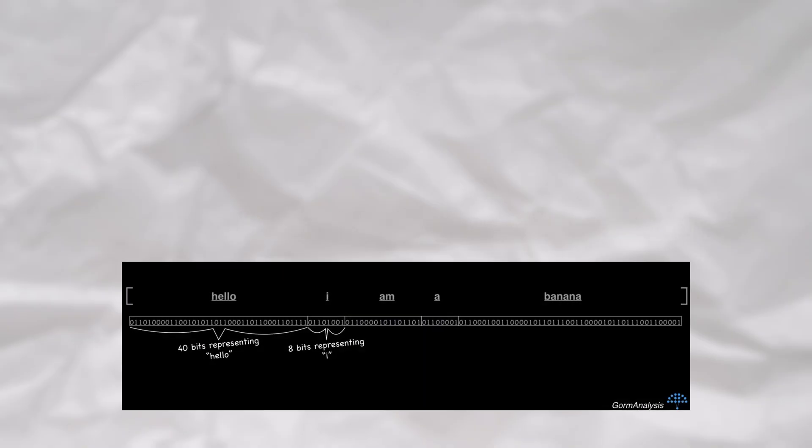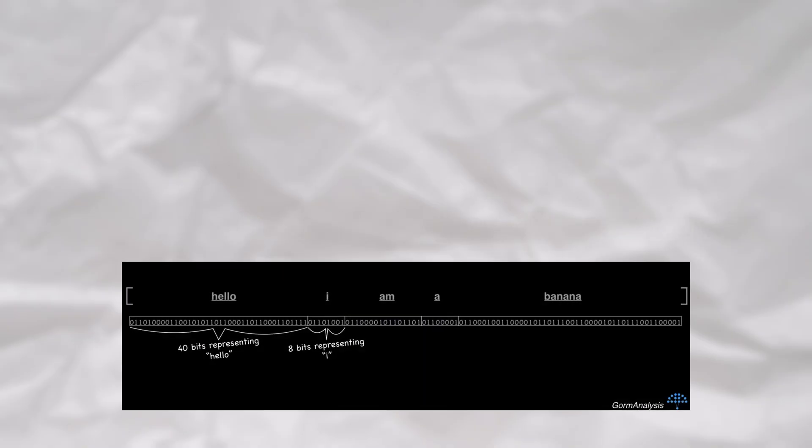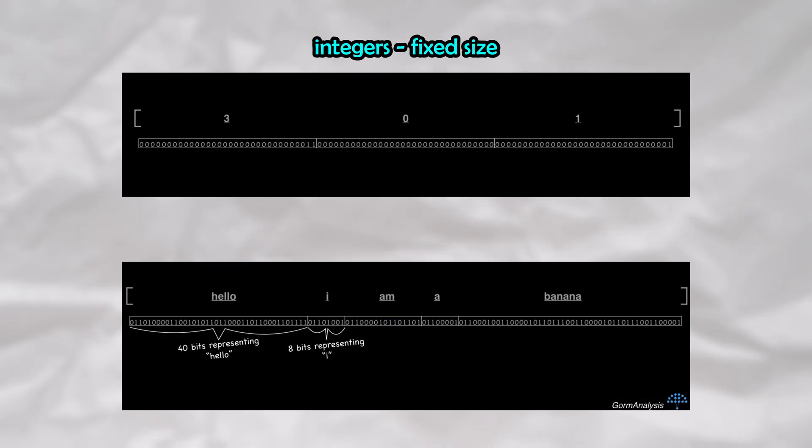Since these strings are different sizes, if we tried to store these in contiguous memory blocks, it would end up looking something like this. In the first example, each array location is a fixed size, but in the second example, each array location is a variable size.